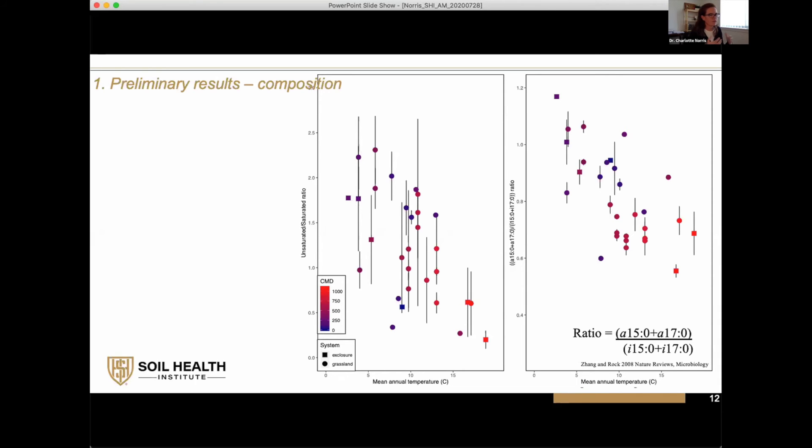Anti-iso takes up more space compared to iso. More anti-iso biomarkers are more fluid and flexible. It's the same idea as unsaturated and saturated, and you've got the same trend. With increasing temperature, you've got a decreasing ratio.